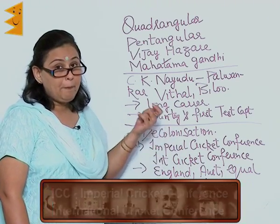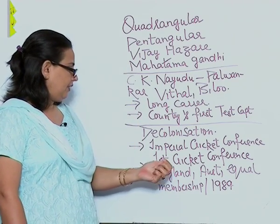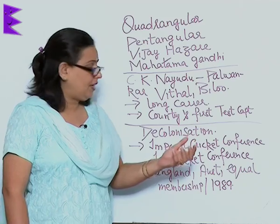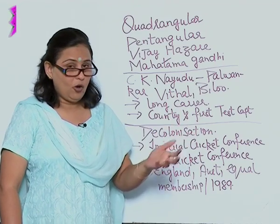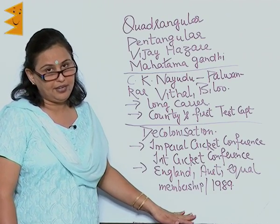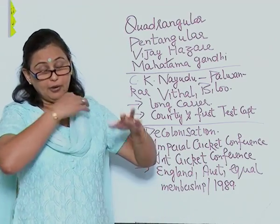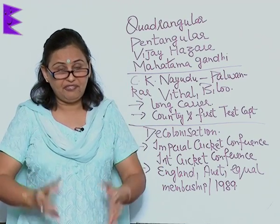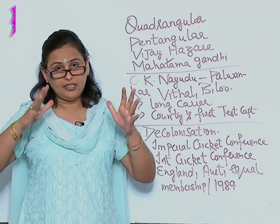The most striking influence of decolonization on cricket was the name change: the ICC was earlier called the Imperial Cricket Conference, and it changed to the International Cricket Conference — removing the word 'imperial.' Also, the earlier heavy influence of founding members England and Australia gave way to equal membership granted to all countries from 1989 onwards, clearly showing decolonization's effect on cricket.